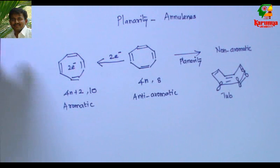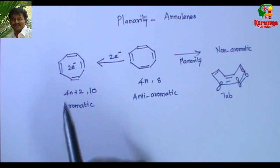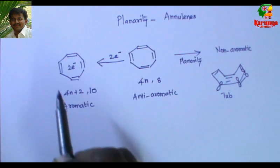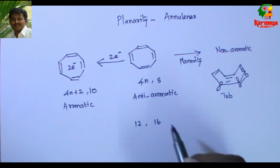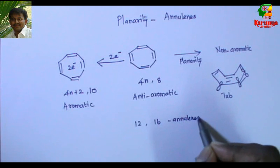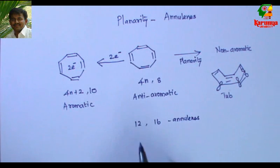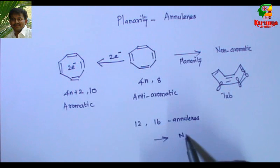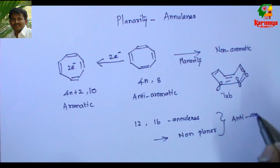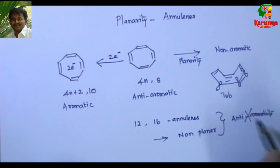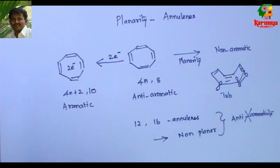Provided the molecule is planar, this system becomes planar when you add two electrons, because it is aromatic. For the same reason, 12-annulene, 16-annulene — in which the number of pi electrons are multiples of 4 — they are non-planar, and there is no question of anti-aromaticity. So 8-annulene, 12-annulene, and 16-annulene are all non-aromatic; they twist themselves to become non-planar.